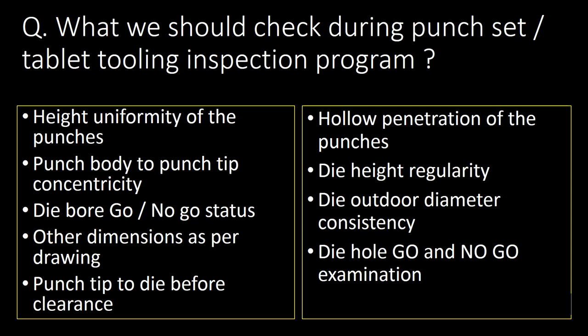What should be checked during punch set or tablet tooling inspection? Nine important checks are: (1) height uniformity of the punches, (2) punch body to punch tip concentricity, (3) die bore go/no-go status, (4) other dimensions as per drawing, (5) punch tip to die bore clearance, (6) hollow penetration of the punches, (7) die height regularity, (8) die outer diameter consistency, and (9) die hole go/no-go examination.